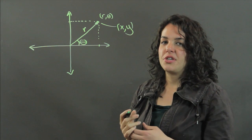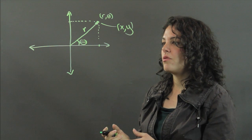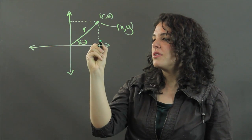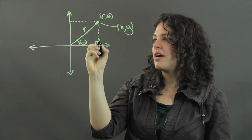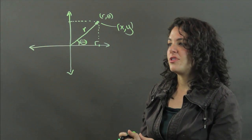So, to understand how we convert from polar to rectangular coordinates, if you notice, I've drawn a right triangle here, you'll understand where the conversion comes from.